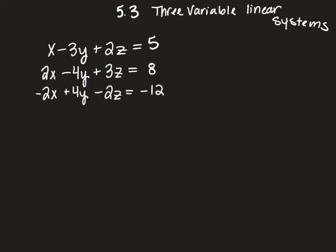Basically, we're going to use elimination, and we're going to pick one variable to get rid of first. Looking at our equations, I've got x, 2x, and negative 2x. I'm going to get rid of x — I'm going to pick two of my equations to work with first to add together. You're going to pick any two of your equations, get rid of one variable, whatever variable you want.